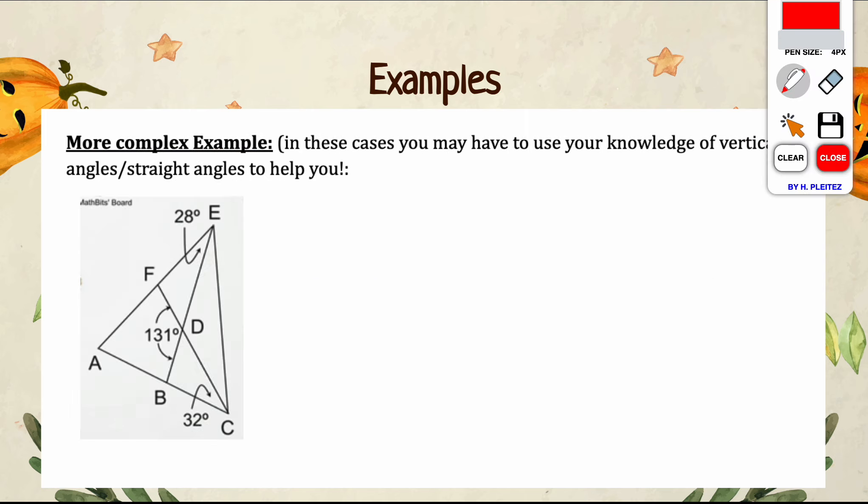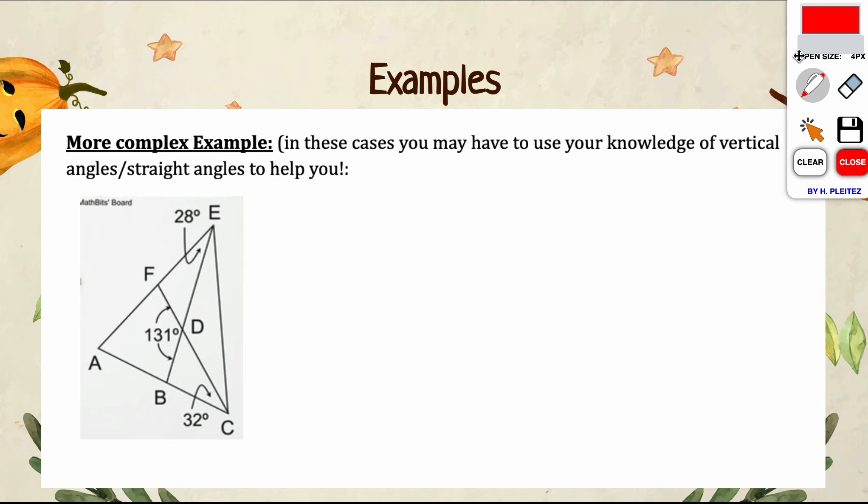Last but not least, here is the more complex example that I promised you. In these cases, we're going to have to use our knowledge of vertical angles, straight angles, and maybe even our parallel lines. I don't really want to go too much into this example because it is a question that you guys will be practicing on your task cards, but I just want to show you. What you should see is that I see intersecting lines, and I also see multiple different triangles within this larger triangle.